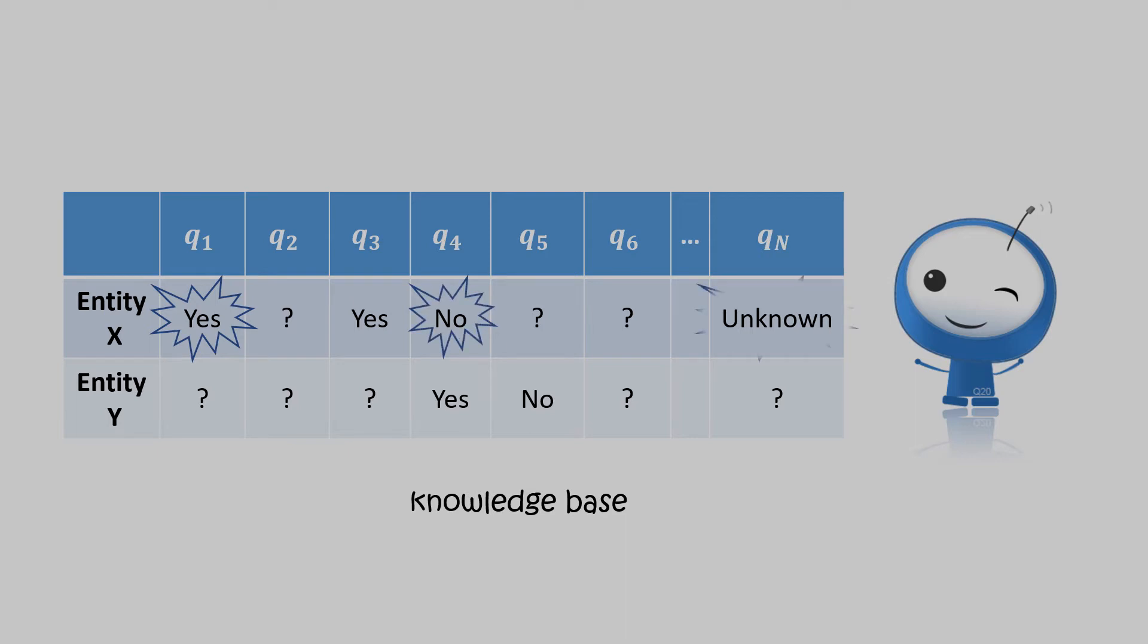For a question-entity pair, the entry may be yes, no, unknown, or missing as marked by the question marks. So an entry corresponds to a fact of the entity, right?